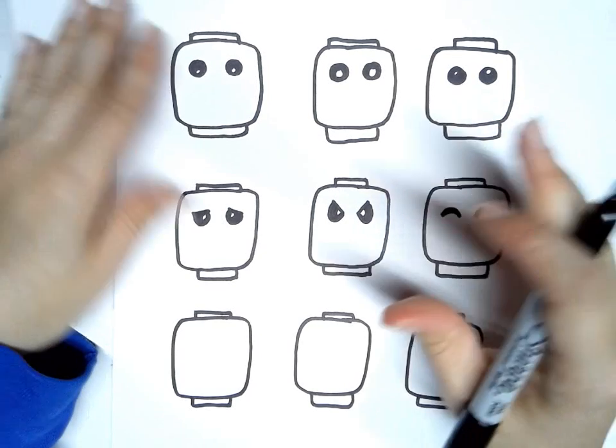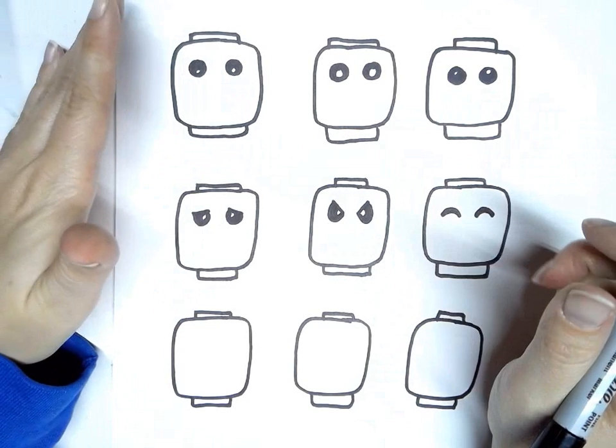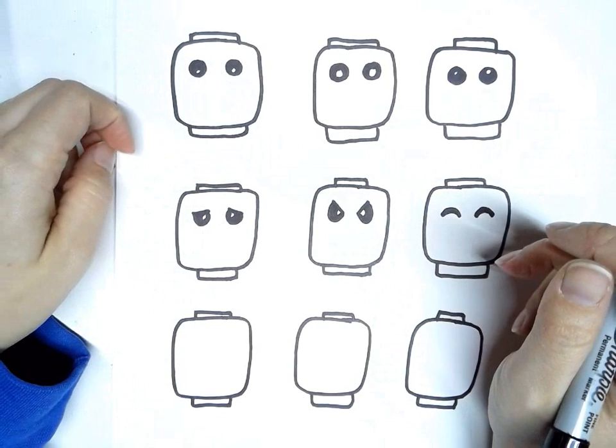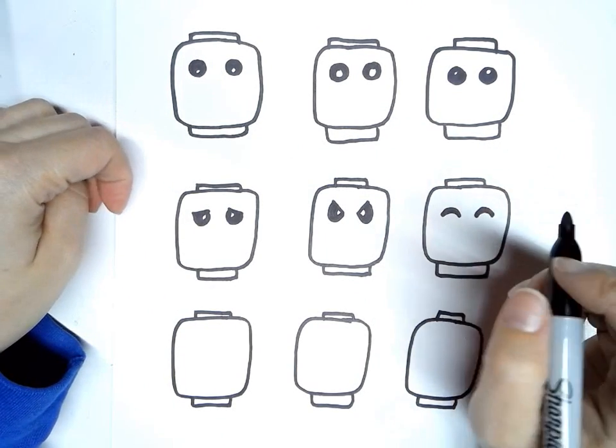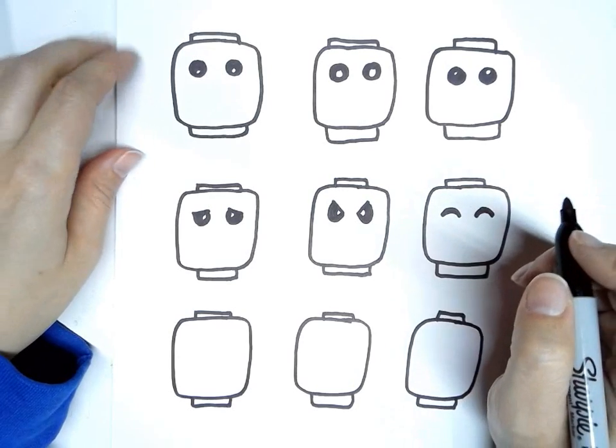And then, you don't have to draw anything for the nose because most Lego people don't have noses, right? But then the other things you need to draw are the mouth and the eyebrows.